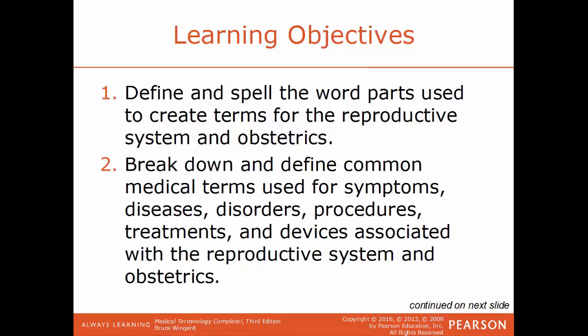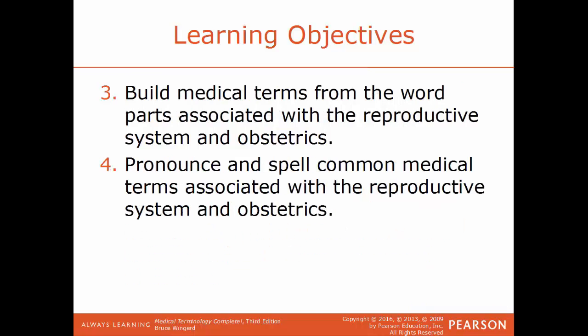Learning objectives for this chapter: define and spell the word parts used to create terms for the reproductive system and obstetrics; break down and define common medical terms used for symptoms, diseases, disorders, procedures, treatments, and devices associated with the system and obstetrics; build medical terms from the word parts associated with the system; and pronounce and spell common medical terms associated with the reproductive system and obstetrics.